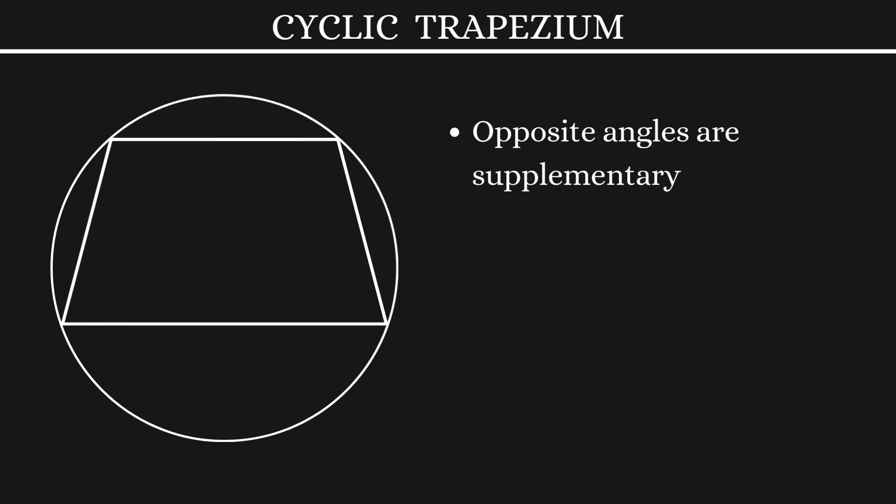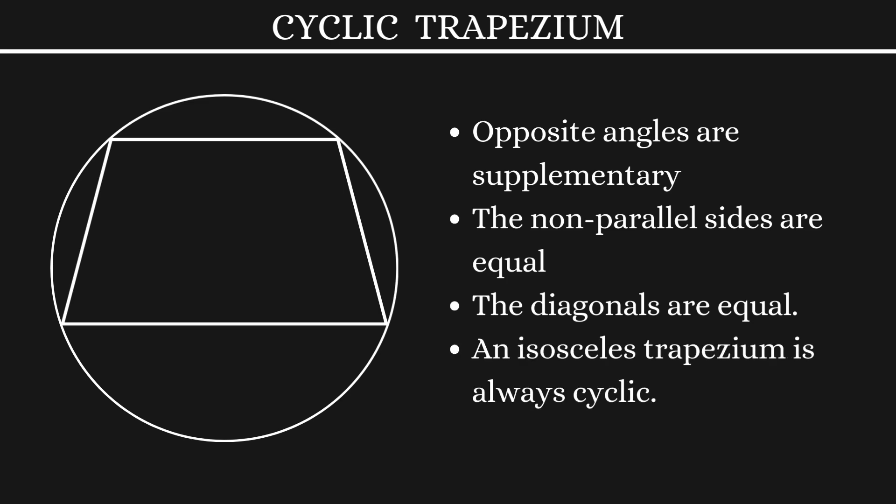The next property is the two non-parallel sides are of equal length. The following property is the diagonals are also equal. Finally, an isosceles trapezium is always cyclic. Now, let's dive into each of these properties and prove them.